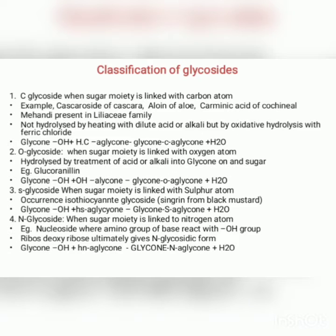Classification of glycosides — C-glycosides: when the sugar moiety is linked with a carbon atom. Examples include cascaroside of cascara, aloin of aloe, carminic acid of cochineal, and mehendi present in the lily-acid family. These are not hydrolyzed by heating with dilute acid or alkali, but by oxidative hydrolysis with ferric chloride. The reaction is: Glycone–OH + HC–Aglycone → Glycone–C–Aglycone + H₂O.